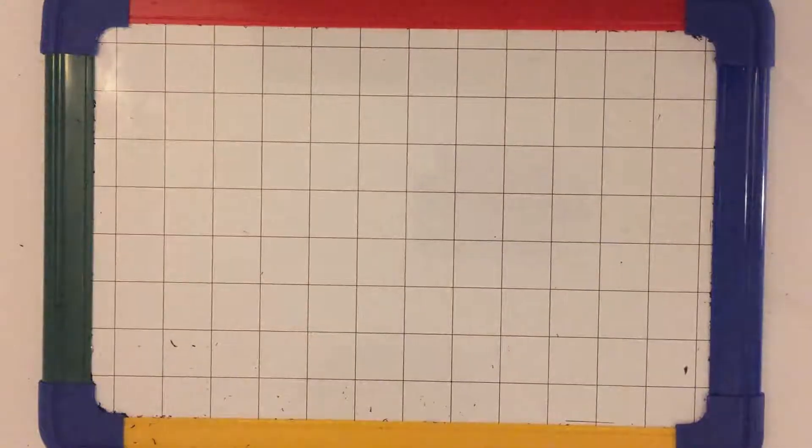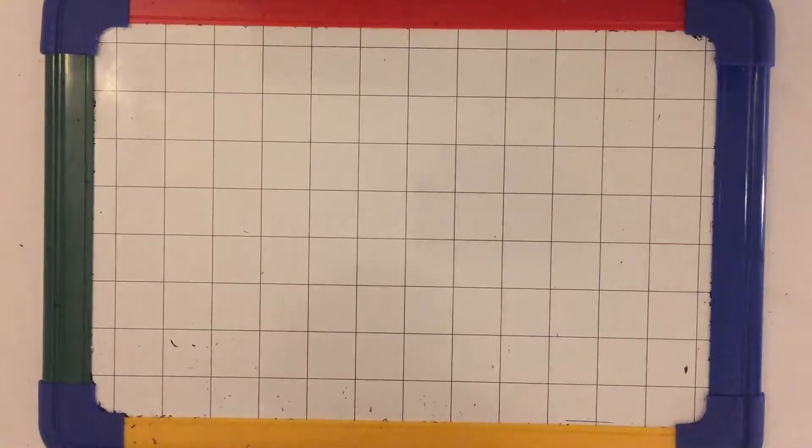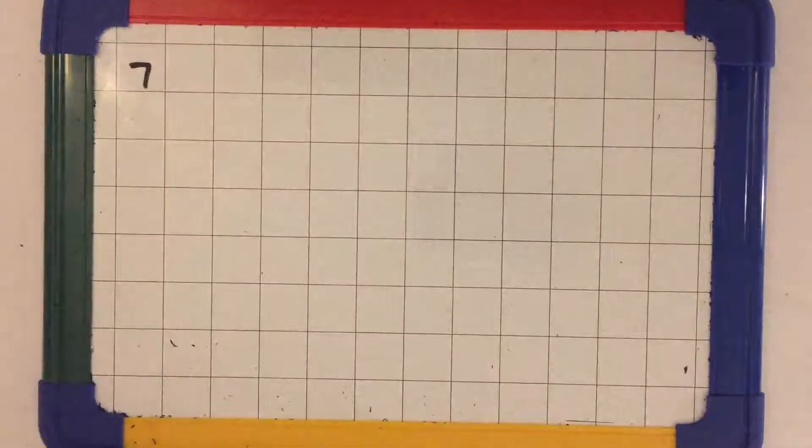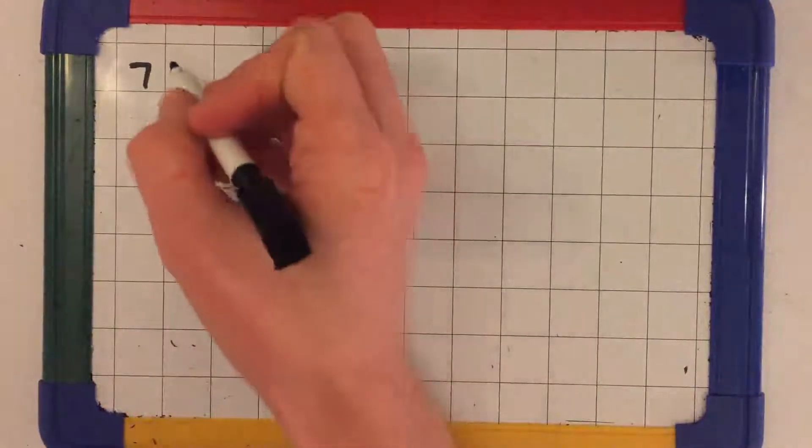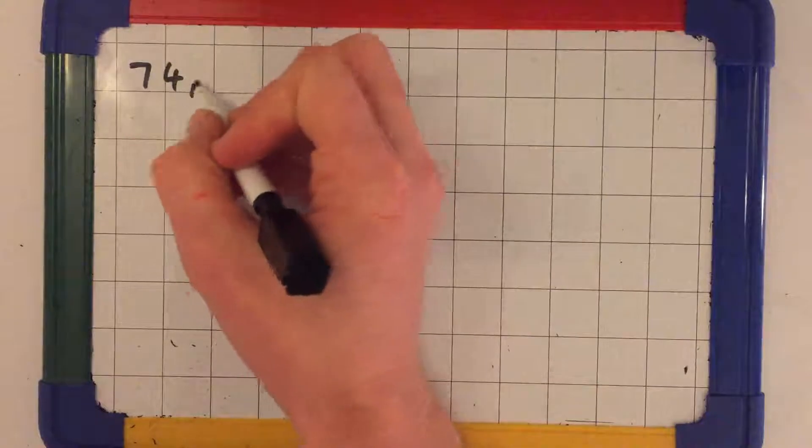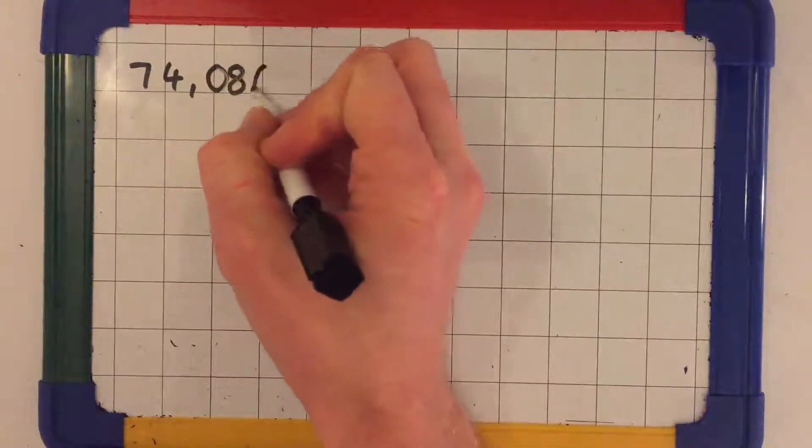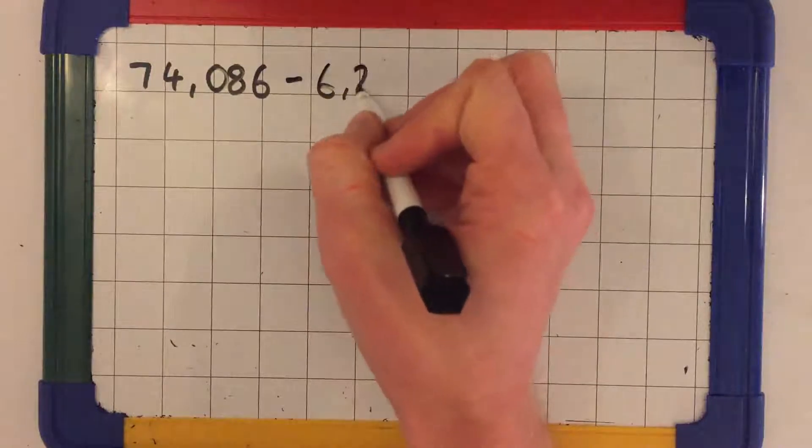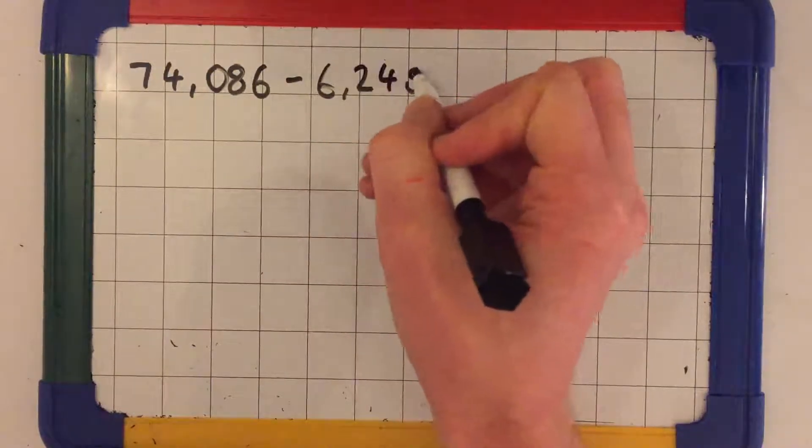In this video, we're going to look at subtracting a four-digit number from a five-digit number using column subtraction. We're going to solve the equation 74,086 subtract 6,245.